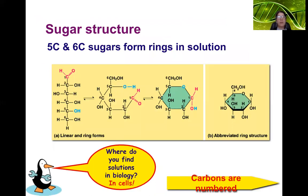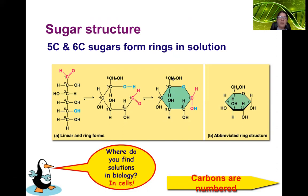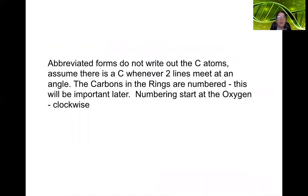5 and 6 carbon sugars tend to form rings in solution. The linear form folds on itself and forms a ring structure. This is the full ring structure; to the very right is an abbreviated ring structure. The carbons are numbered. In cells, most sugars are in ring form. In the abbreviated forms, we do not write out the carbon atoms, so you have to assume there's a carbon whenever two lines meet at an angle.